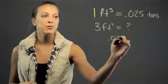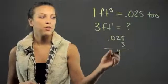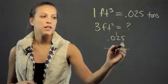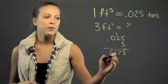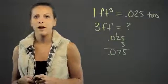So we're going to take 0.025, multiply by 3 and you have 15, 7, 0 and we're going to move our decimal place over and we get 0.075 tons.